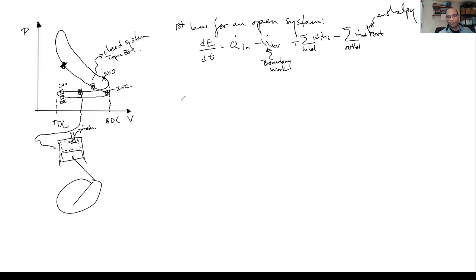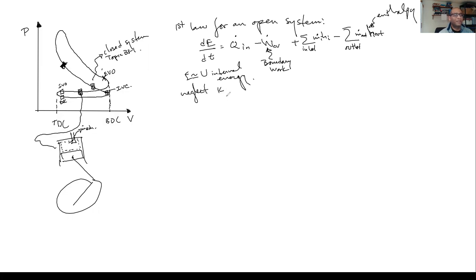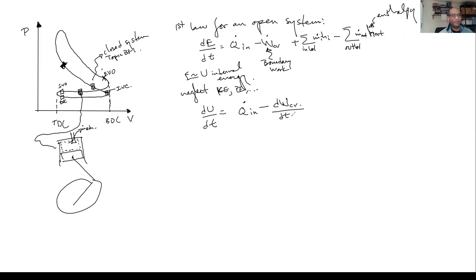For our model I'm going to disregard turbulence, potential energy, and kinetic energy stored in turbulence — so I equate total energy E to internal energy U. Kinetic energy is technically non-zero because of turbulence, but we neglect all of these. So now we have dU/dt equals Q-dot in minus the work done by the control volume per unit time, which is dW/dt.